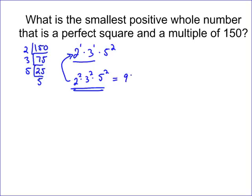The answer is 2 squared times 3 squared times 5 squared, which turns out to be 900. If you took the square root of 900, that would be 30, so that equals 30 squared, and 900 divided by 150 is 6.